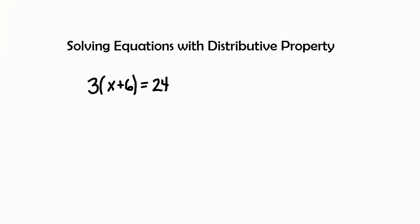In this video we'll be learning how to solve equations with the distributive property. In this equation, 3 times the quantity of x plus 6 equals 24, we see that we have parentheses around a variable and a constant. This shows that any time we see a number on the outside of the parentheses, it's asking us that we need to distribute.